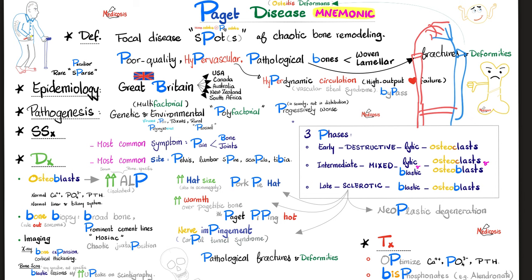Paget's disease is progressive in severity, not in distribution. For example, the pelvis may get progressively worse over years, but the disease does not typically spread to newly affected joints. This is not a migratory disease like rheumatic fever or Lyme disease.